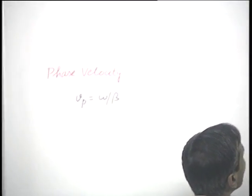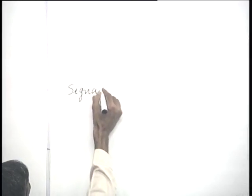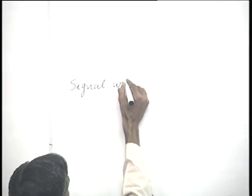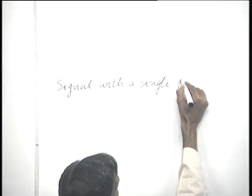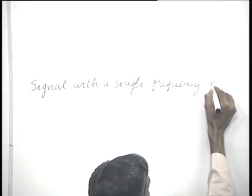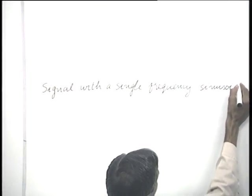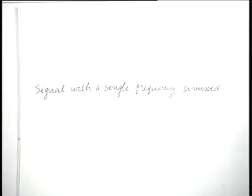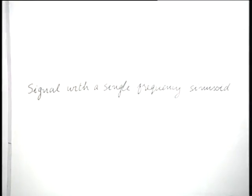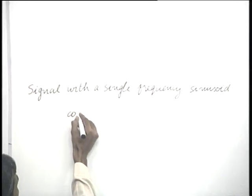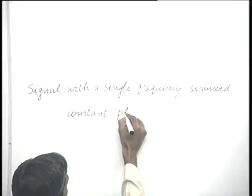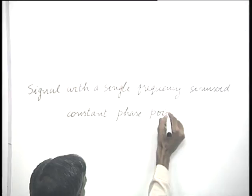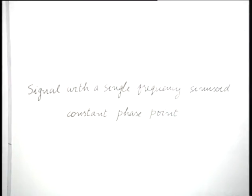For a signal with a single frequency sinusoid, the interpretation of Vp is straightforward. It represents the velocity with which an observer must travel to keep pace with the constant phase point. An observer who wishes to remain on a constant phase point must travel with velocity Vp, that is omega by beta.